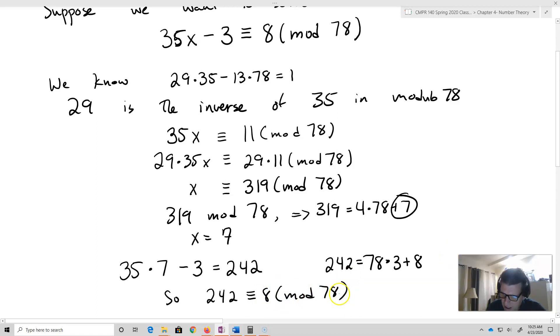So what that means here is that 242 is equivalent to 8 mod 78. And that checks it. That actually shows that x equals 7.